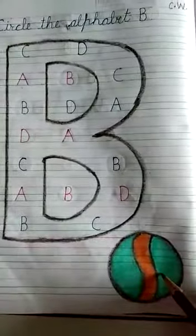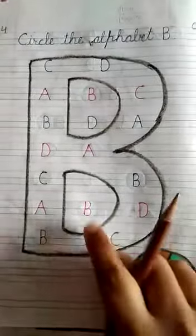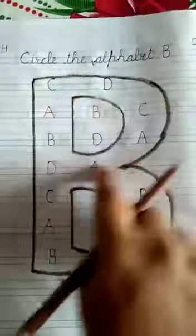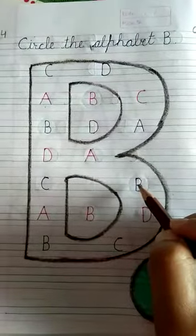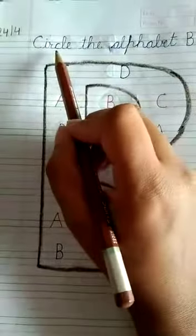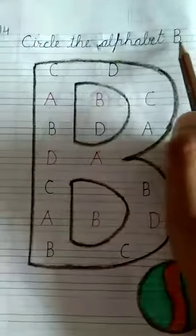Okay, what is this? Ball. B for ball. And this B. Okay, and B says B. Okay, let's start. Circle the alphabet B.